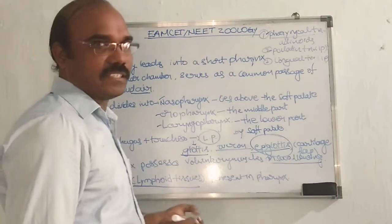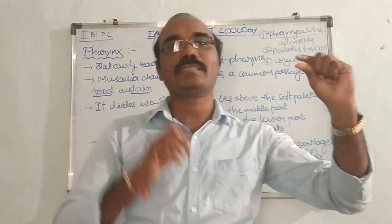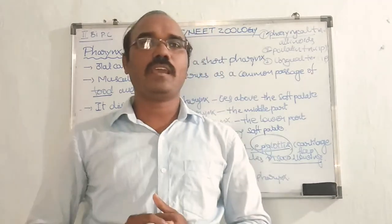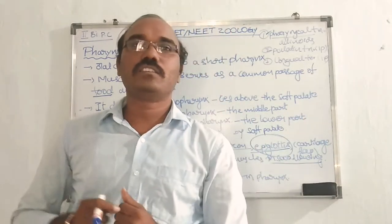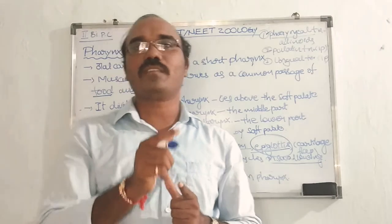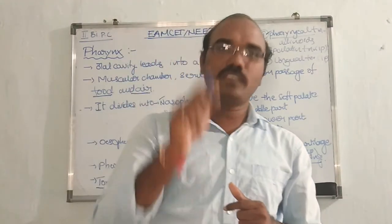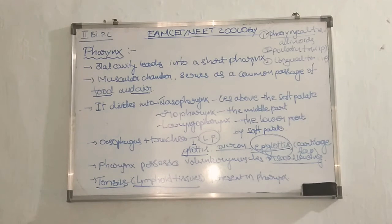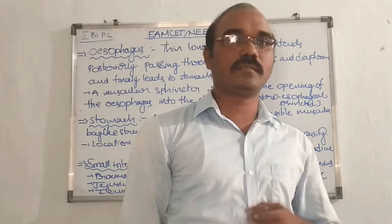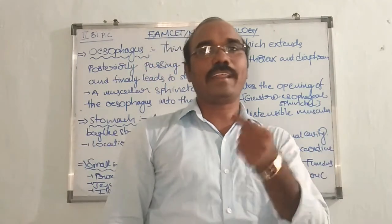These are all about the pharynx. The pharynx opens into a long tube-like structure which connects the pharynx and stomach — that is called the esophagus. The esophagus is a long muscular tube connecting the pharynx and stomach. The anterior part of esophagus is connected to the pharynx, and the posterior part is connected to the stomach.